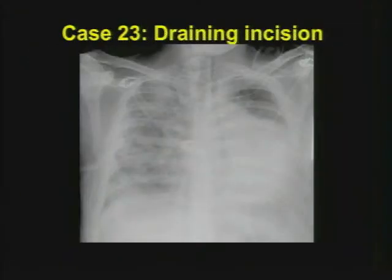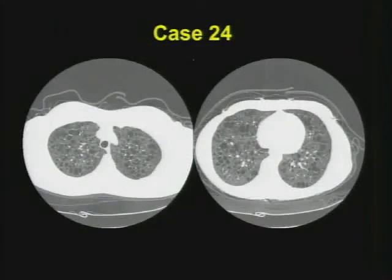Case twenty-three: a draining incision. I'll give you a clue — there was a history of a draining sternal incision. Are there any features on this film that might tell you that they're having sternal problems? And finally, case twenty-four: another case of holes.